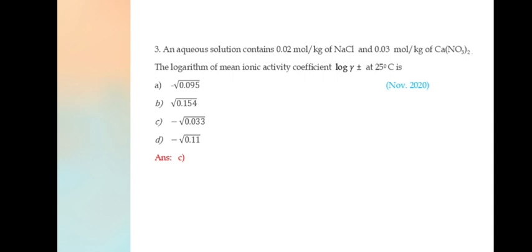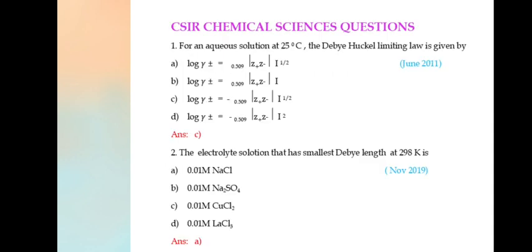An aqueous solution contains 0.02 mole per kilogram of sodium chloride and 0.03 mole per kilogram of calcium nitrate. The logarithm of mean ionic activity coefficient log(γ±) at 25°C is -0.509·√0.033. I hope you all understood about this concept.